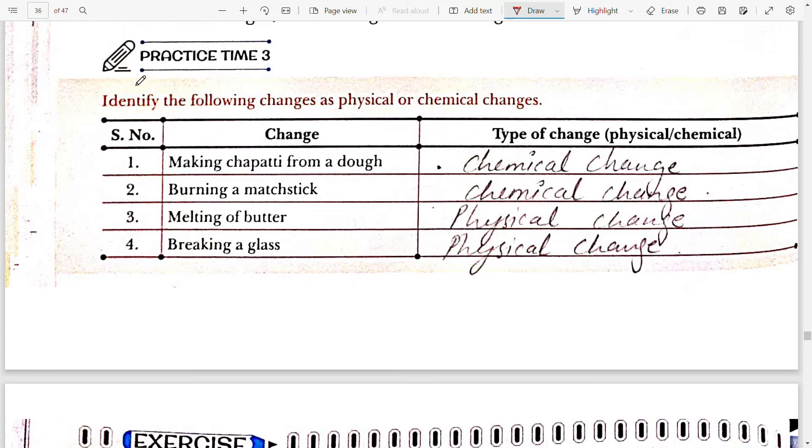Moving to the next, Practice Time 3: identify the following changes as physical or a chemical change. First change is making chapati from a dough, it is a chemical change. Burning a matchstick, it is a chemical change.